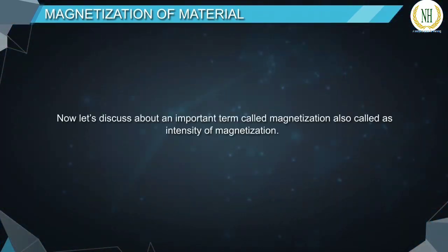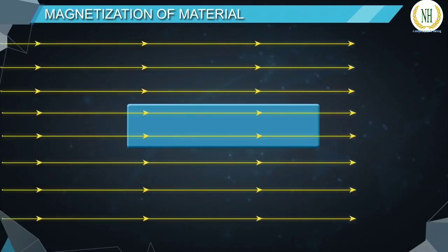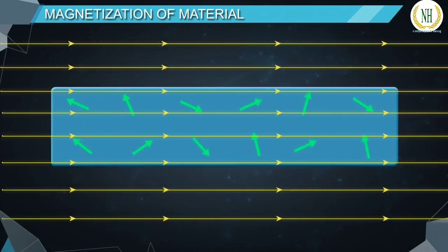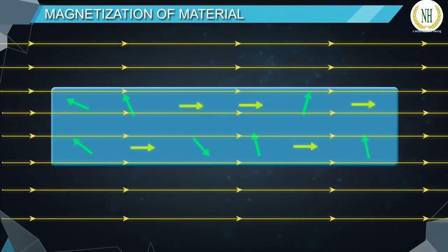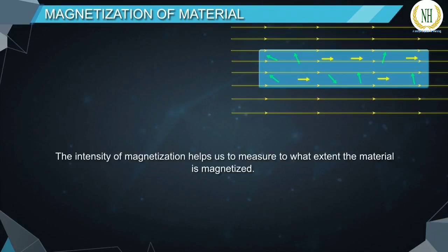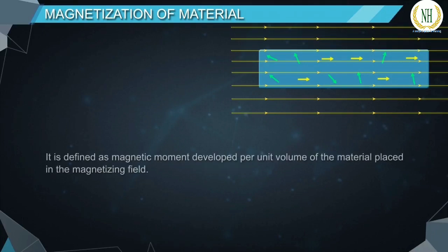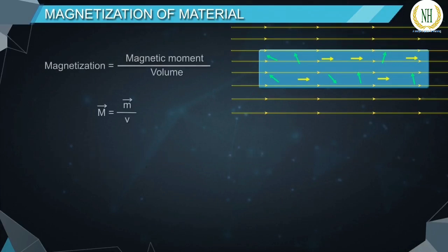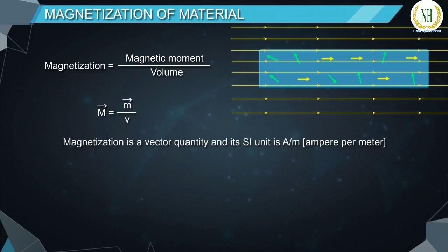Let's discuss an important term called magnetization, also called intensity of magnetization. When a magnetic material is subjected to a magnetizing force, the material becomes magnetized and develops a net magnetic moment not equal to zero. The intensity of magnetization measures to what extent the material is magnetized. It is defined as magnetic moment developed per unit volume. Magnetization equals magnetic moment divided by volume, is a vector quantity, and its SI unit is ampere per meter.